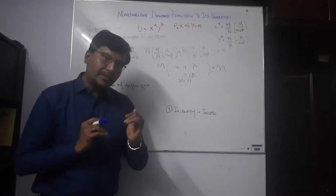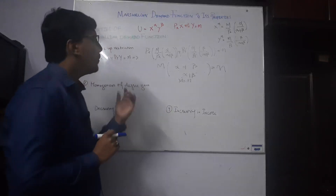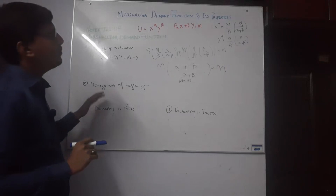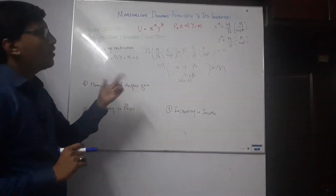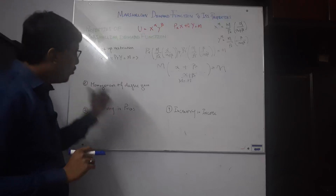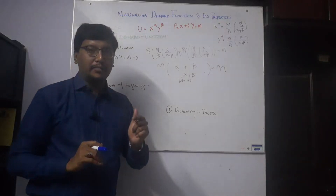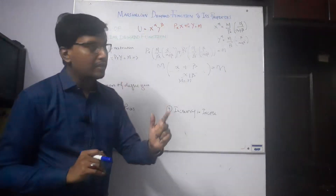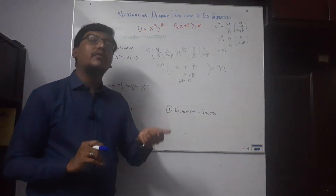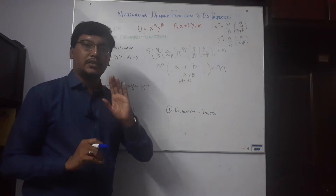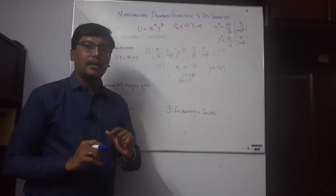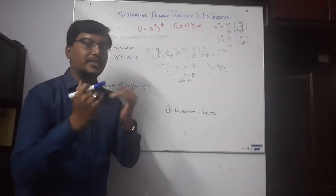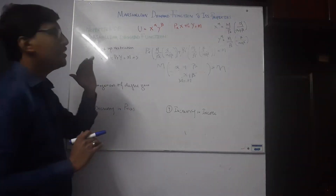If prices and income all increase by a certain level, we repeat them within a specific value. If the function repeats exactly, it is homogeneous. If after multiplying by lambda the lambda cancels out entirely, then the function is homogeneous of degree zero.